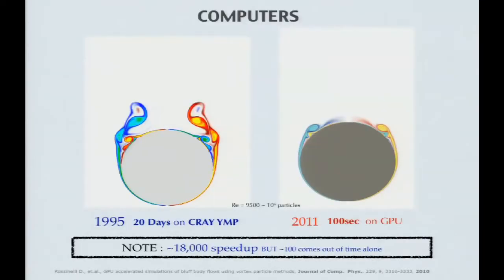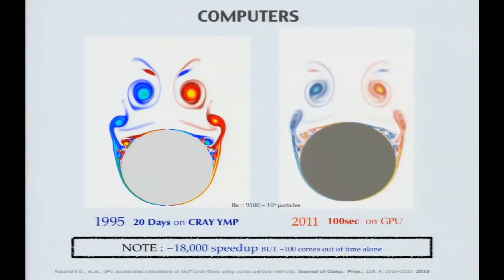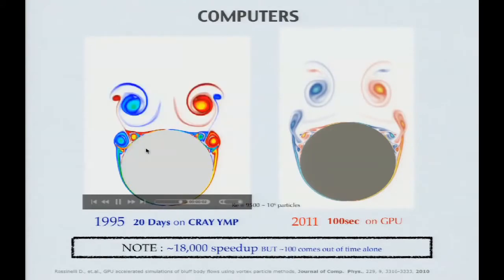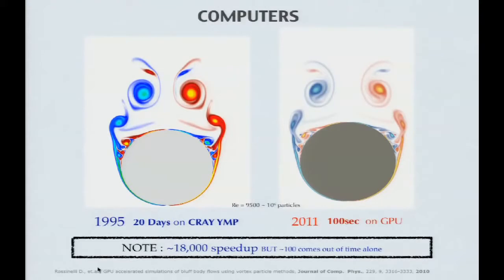We've extended these techniques to modern computers. This is flow past a cylinder at Reynolds number 9500 — a challenging flow generating many structures. In 1995, I had one Cray YMP allocation, 20 days, and either succeeded or not. Today, my students can do this in 100 seconds, giving tremendous capability for parametric studies and engineering. About a factor of 100 comes from letting time pass, but a factor of 180 in this case comes from human ingenuity and learning to use these particular machines.